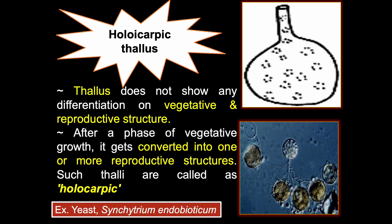Next is the holocarpic thallus. This thallus does not show any differentiation into vegetative and reproductive structures like the eucarpic thallus. After a phase of vegetative growth, it gets converted entirely into one or more reproductive structures, and such thalli are always called holocarpic. Organisms like yeast, Synchytrium, and Olpidium produce holocarpic thalli.